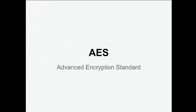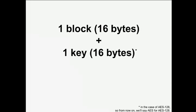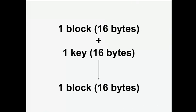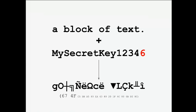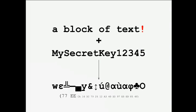Let's start with AES — Advanced Encryption Standard. I don't care about how it works internally. AES is a block cipher: it takes a block of 16 bytes and a key of 16 bytes (in the case of AES-128), and returns a different block of 16 bytes. For example, a block of text and a key gives you something starting with BF11. If you change the key just a bit, the result is completely different — starting with 67F. Or if you change the input block, once again you get a completely different result.